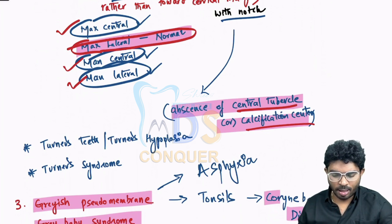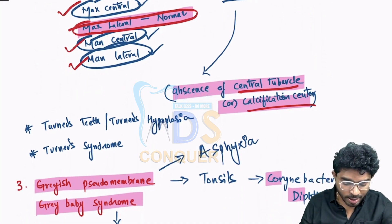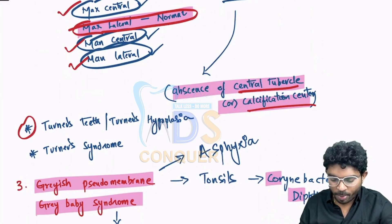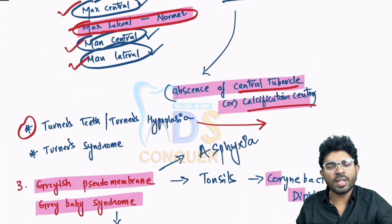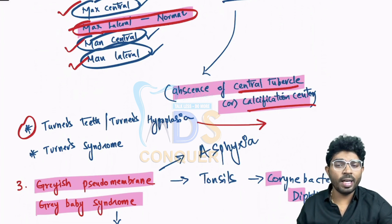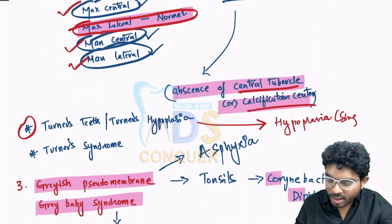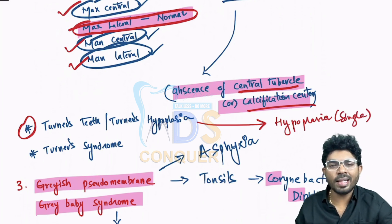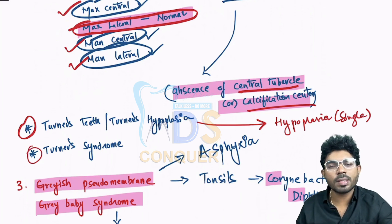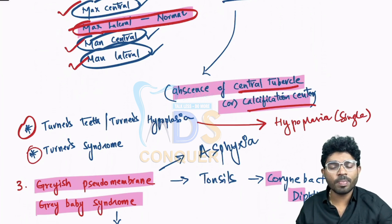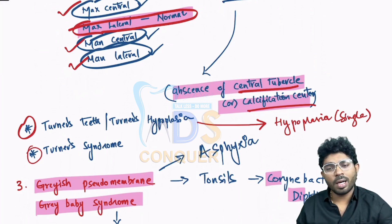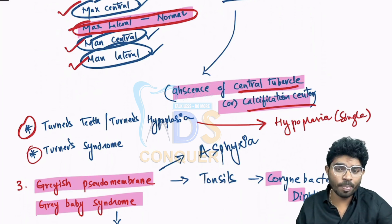Similarly, note what is Turner's hypoplasia or Turner's teeth. Turner's hypoplasia is basically trauma or infection to the deciduous teeth affecting the underlying permanent dentition. You will have hypoplasia of only a single tooth. So in a case-based question, whenever an abnormality involves only a single tooth, you can go for the answer Turner's hypoplasia or Turner's teeth. Can you tell me what is Turner's syndrome and what is its chromosomal notation? Please drop it in the comment box.